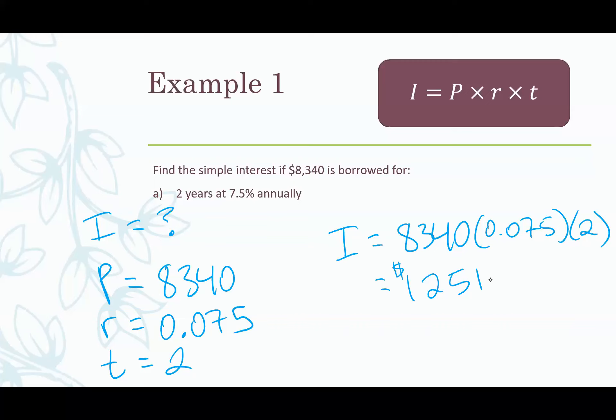P represents principal, the original amount of money. So this would be the $8,340 because that's what we're borrowing. R is the interest rate. This is written as 7.5%, but remember we have to express it as a decimal. So we can convert it to a decimal by moving the decimal place two to the left, 0.075. Lastly, t represents the number of years which is two.